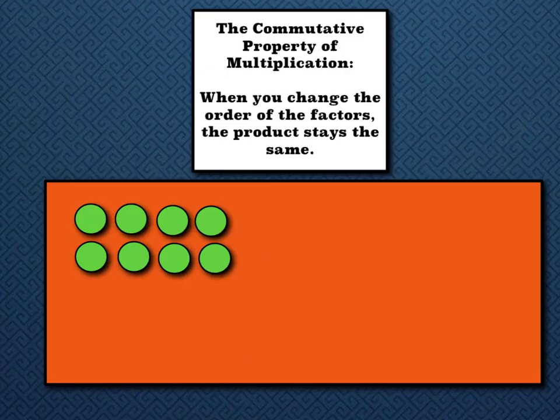The commutative property of multiplication states that when you change the order of the factors in a problem, the product stays the same. It's just like the commutative property of addition.